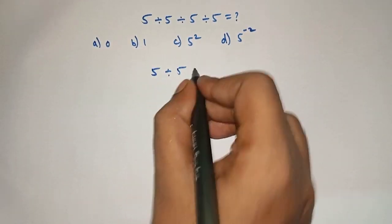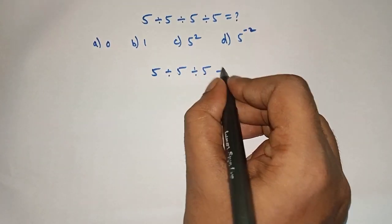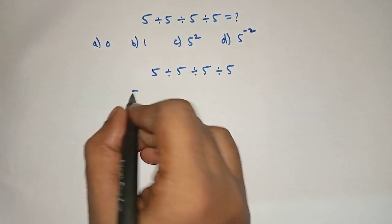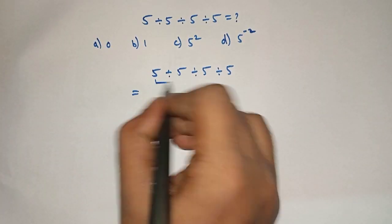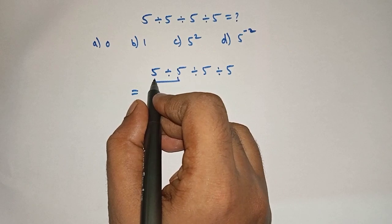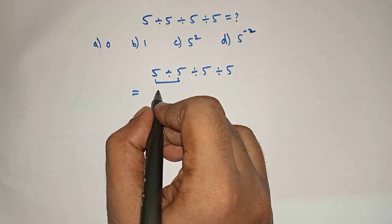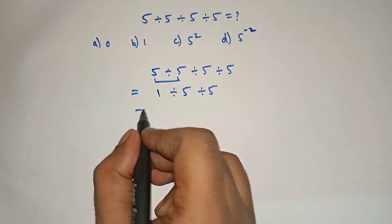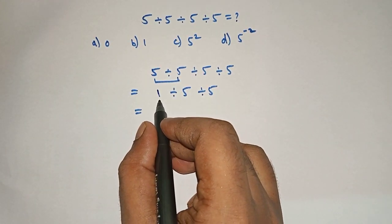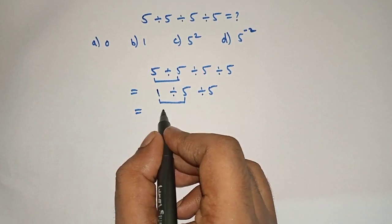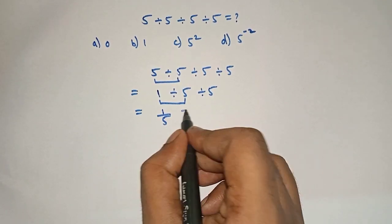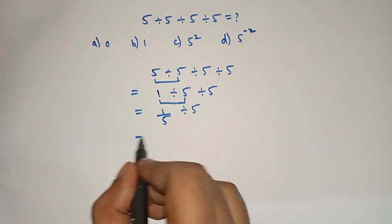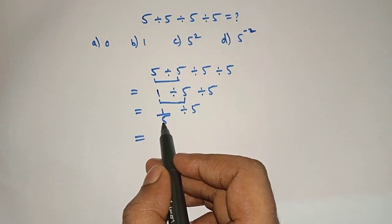5 divided by 5 divided by 5 divided by 5 equals - first we will solve this term. So 5 divided by 5 is 1. Now we will solve this term: 1 divided by 5. Now to divide 1 by 5 by 5...